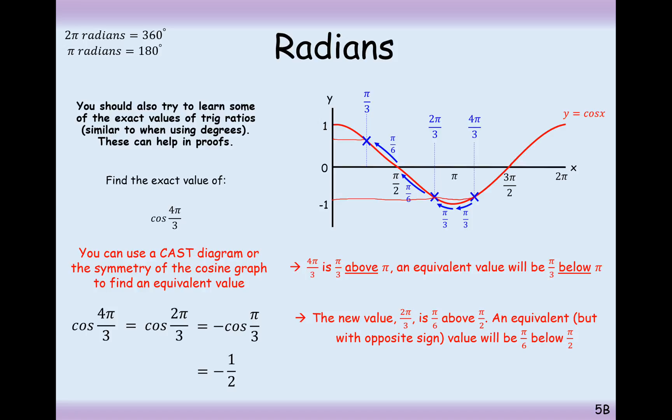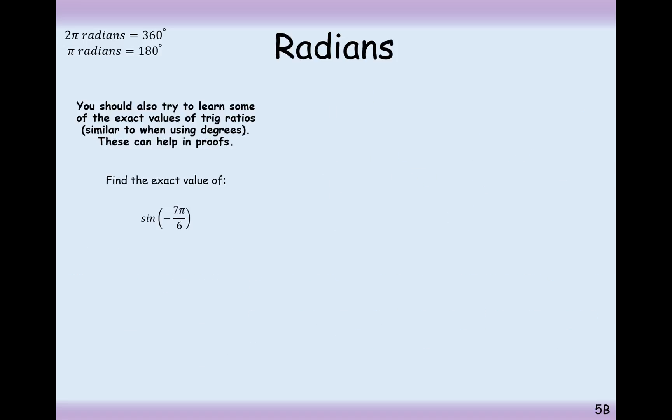Using the graphs, we can also find related trig values. Finding the exact value of sin(-7π/6). Let's draw a big long graph here. -7π/6 would be just to the left of -π.